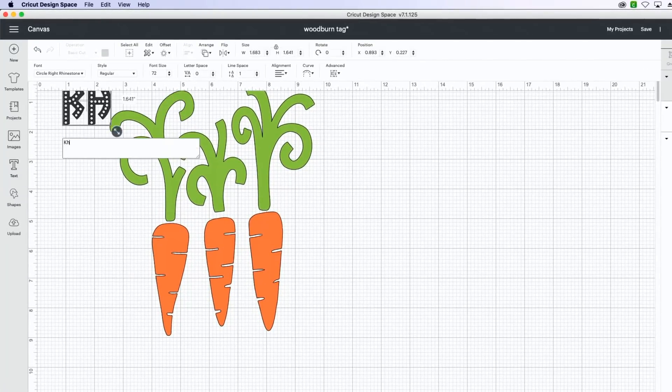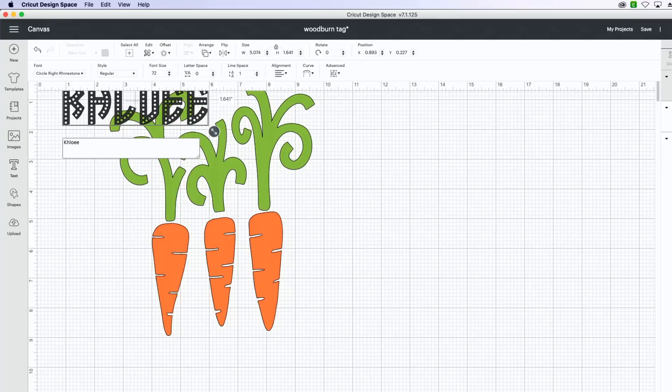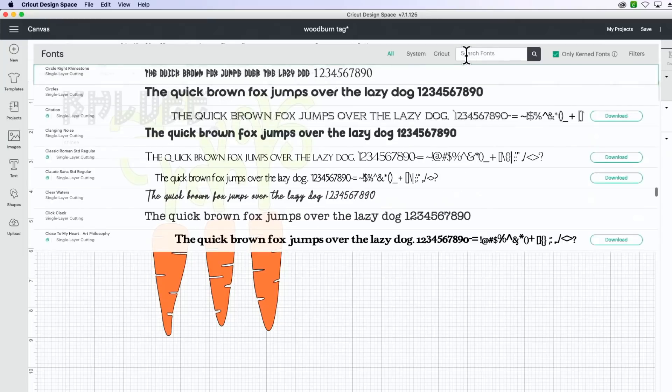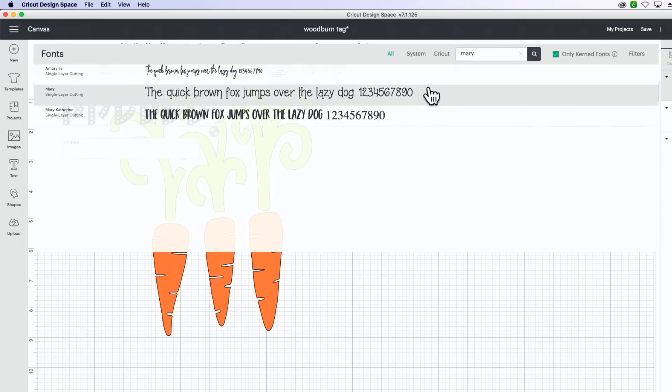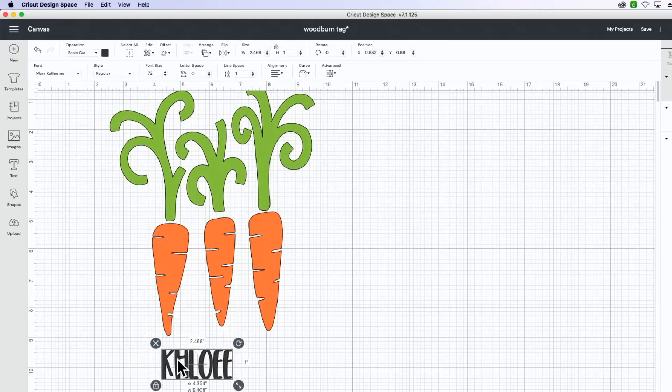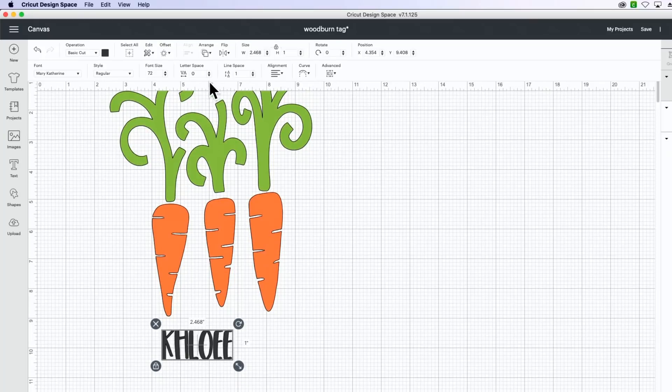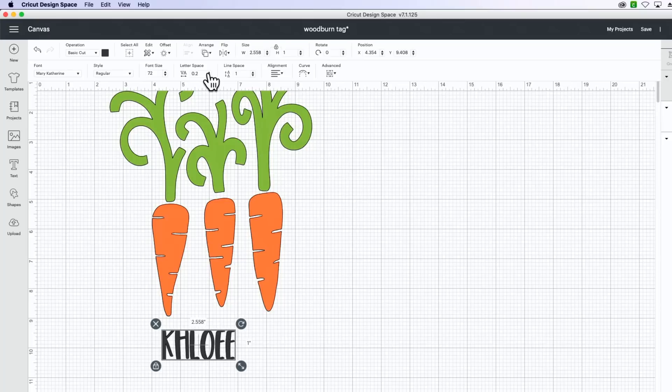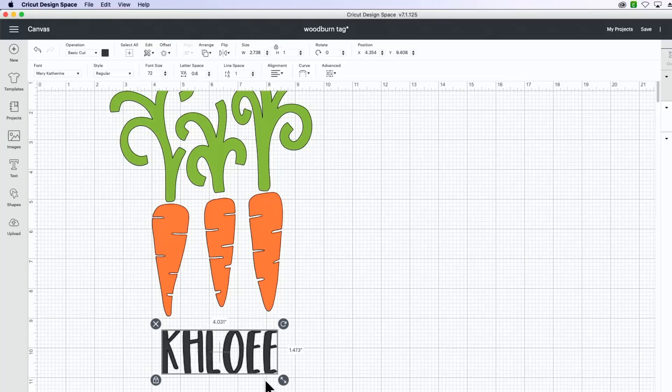So we're going to go ahead and type out the name and we're going to change that font to Mary Catherine. This is the font we're going to be using. Super cute, one of our faves. Whenever we pull that font in here, the letters are kind of close together. So we're going to space them out a little bit just so it looks better. And then we're going to make it as big as the carrots.